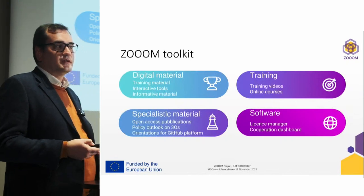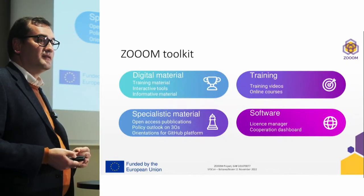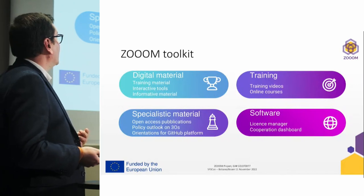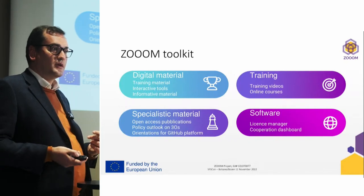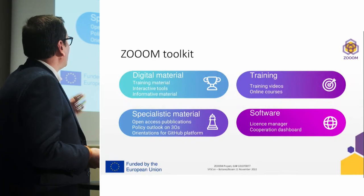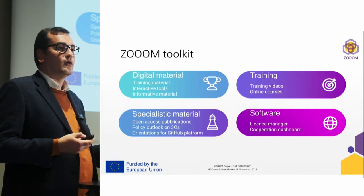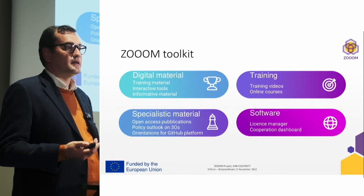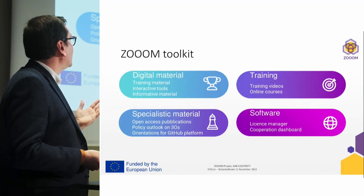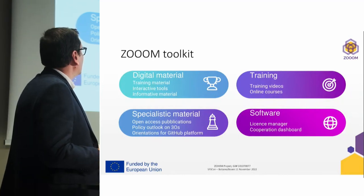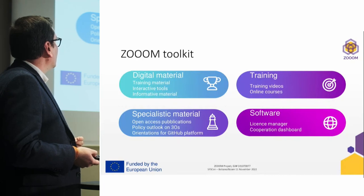So what will be the output of the project? The project will create and disseminate four kinds of outputs. First, there will be digital materials in terms of training materials for researchers and for all the stakeholders we identified, designed according to their specific needs. We will also have interactive tools — online tools to support the licensing and business aspects, in order to provide adequate support for deciding which kind of open licensing strategy could be exploited for the IP that was created.